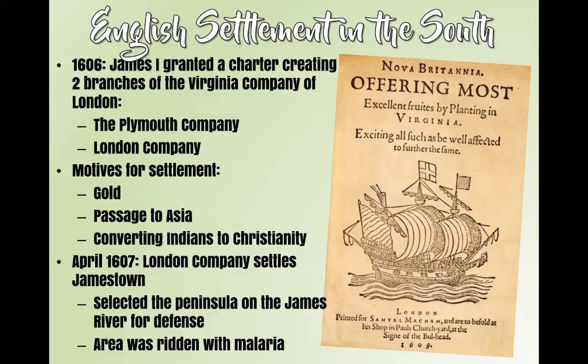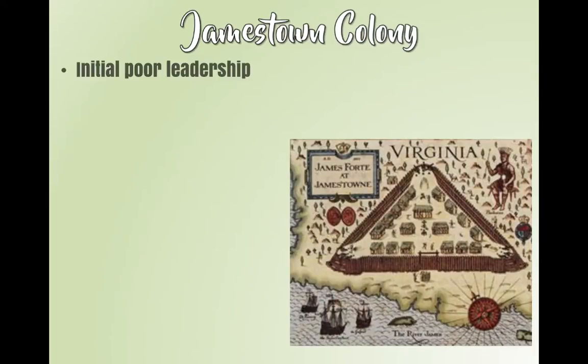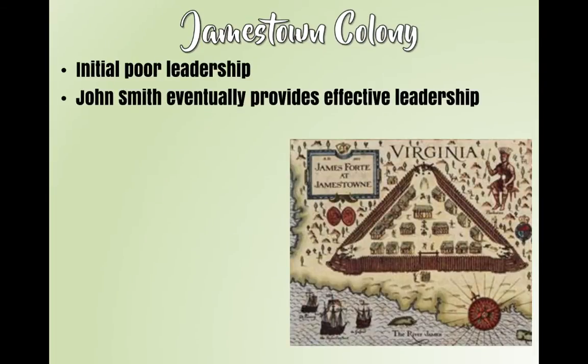In 1607, the London Company settles Jamestown. It seemed perfect and safe, but it's ridden with disease because it's also a swamp.